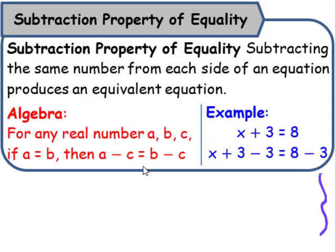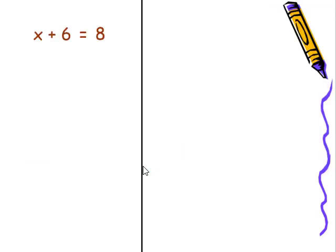Let's take a look at the subtraction property of equality, which states: subtracting the same number from each side of an equation produces an equivalent equation. If we see the equation x plus 6 equals 8, all we have to do is eliminate the plus 6 by subtracting 6, the inverse operation. What undoes addition? Subtraction. On my left-hand side, x plus 6 minus 6 will cancel each other out. This will leave me with x. 8 minus 6 is 2.